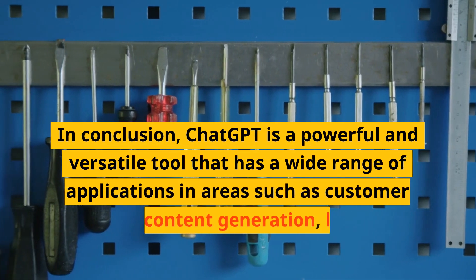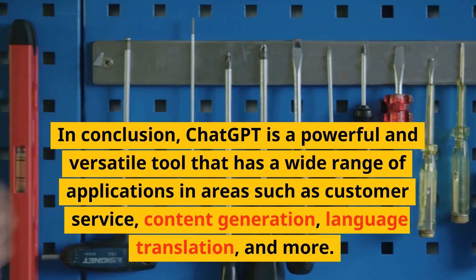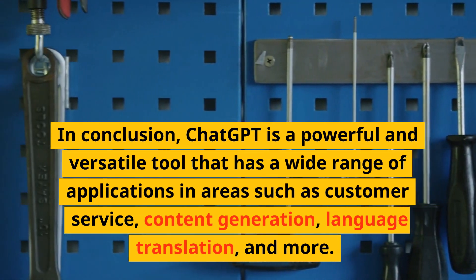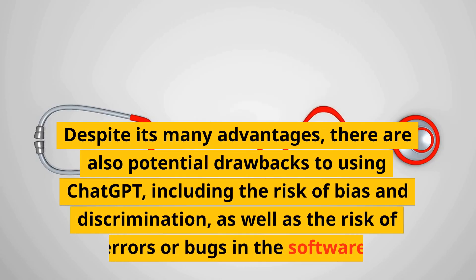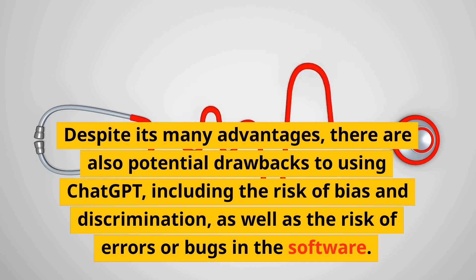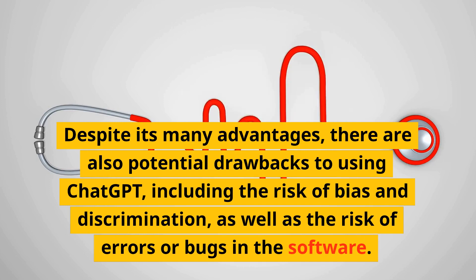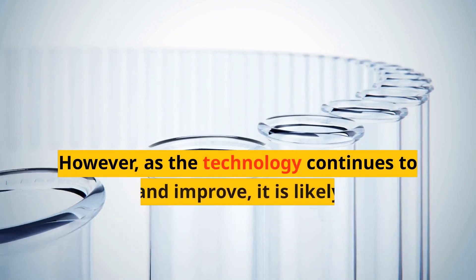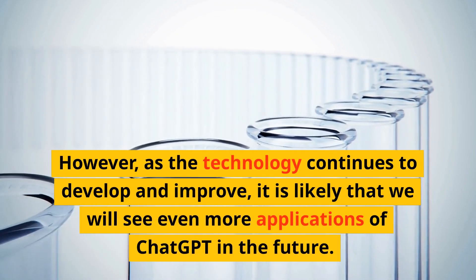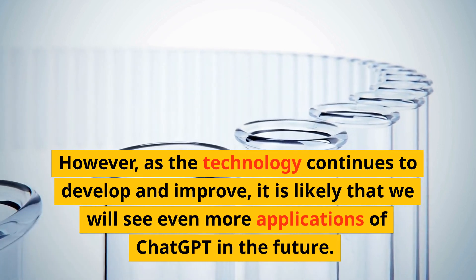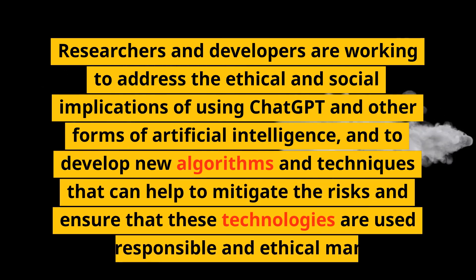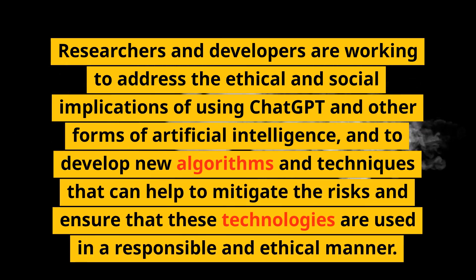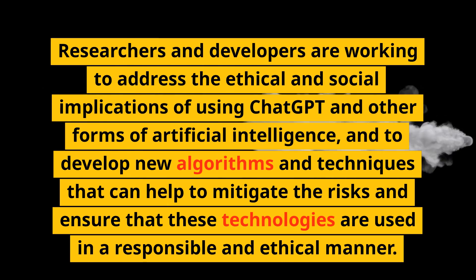In conclusion, ChatGPT is a powerful and versatile tool with a wide range of applications in areas such as customer service, content generation, language translation, and more. Despite its many advantages, there are also potential drawbacks including the risk of bias and discrimination, as well as the risk of errors or bugs in the software. However, as the technology continues to develop and improve, it is likely that we will see even more applications in the future. Researchers and developers are working to address the ethical and social implications and to develop new algorithms and techniques that ensure these technologies are used in a responsible and ethical manner.